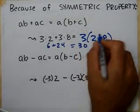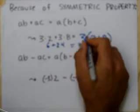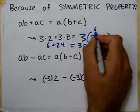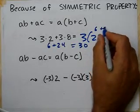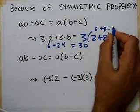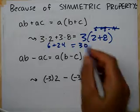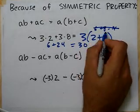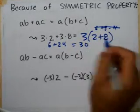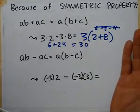Some people walk up to 3 times (2 plus 8) and say 3 times 2 is 6 plus 8 is 14 — but sorry, that's wrong. You have to distribute properly, doing it the right way.